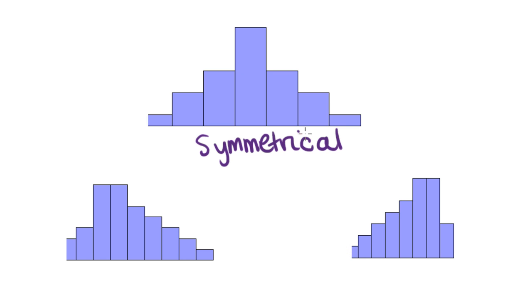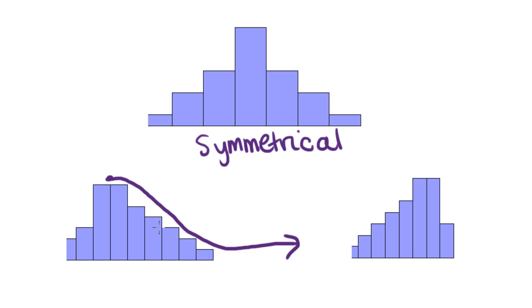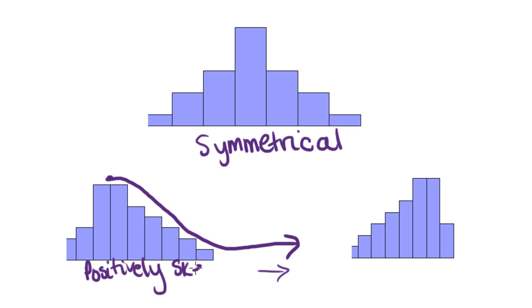Now how do you tell? This is the way I do it. Put your pen on the hump — on the concentration of the data, where the peaky part is — and then have a look at which way the tail is going. You basically want to snowboard down the hill. Go down the direction of the hill and point an arrow. Which way is your arrow pointing? Is it pointing towards positive numbers or negative numbers? This one is pointing in the direction of positive numbers, so it's positively skewed.